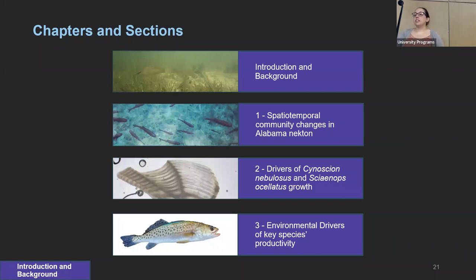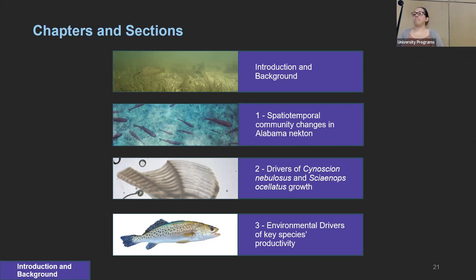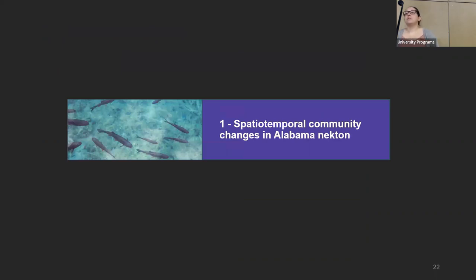This dissertation is focused on understanding the long-term impacts of climate change on Alabama necton. I'm going to do this by identifying what environmental factors drive changes in necton community structure in chapter one, as well as drivers of key species growth and productivity in chapters two and three respectively. Chapter one looks at spatial temporal community changes in Alabama necton.